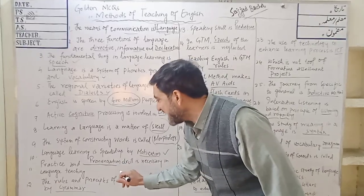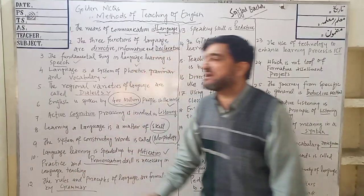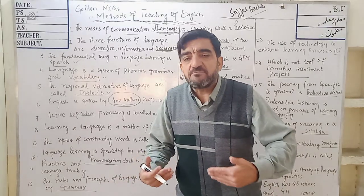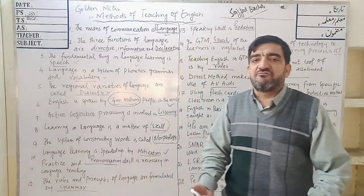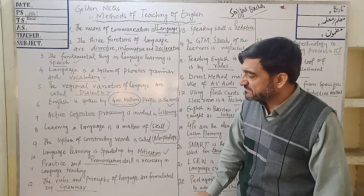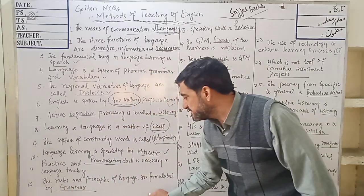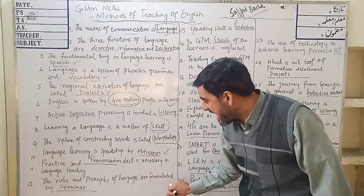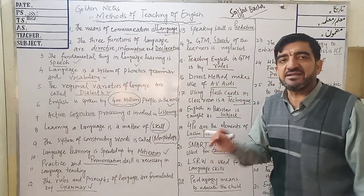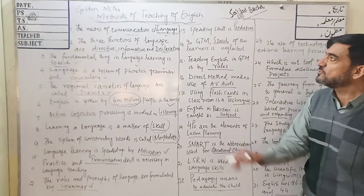MCQ 11: Practice and pronunciation drill is necessary in language teaching. Pronunciation means the art of pronouncing a word and it is a very great problem in Pakistan. MCQ 12: The rules and principles of language are formulated by grammar. Grammar is the mother of rules — the word grammar itself means rules.